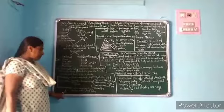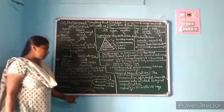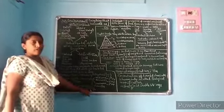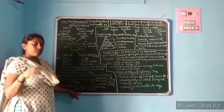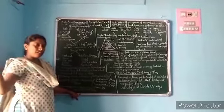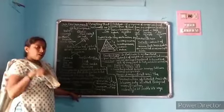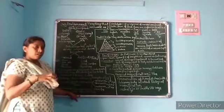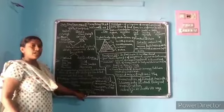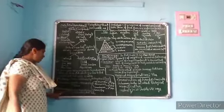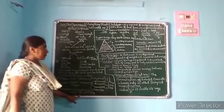Decomposers are microorganisms which feed on waste and dead bodies. For example, if you put vegetable peels or food peels in mud, decomposers will break them down and they will become good manure. Same way with dead bodies also. That is why decomposers belong to the fourth trophic level.